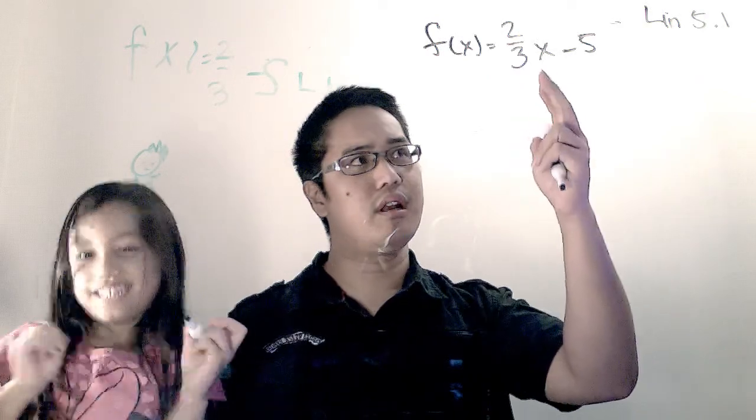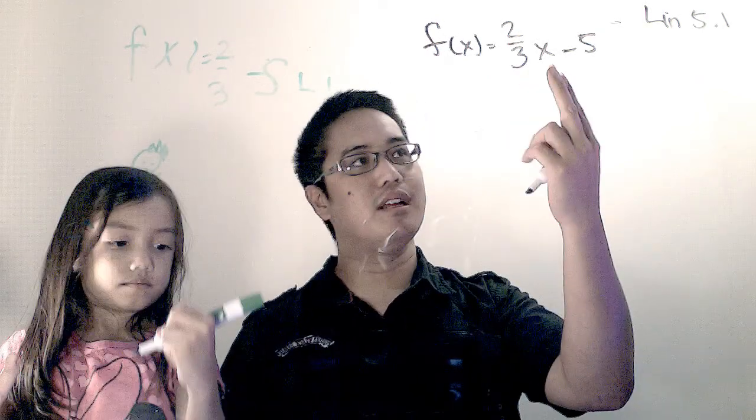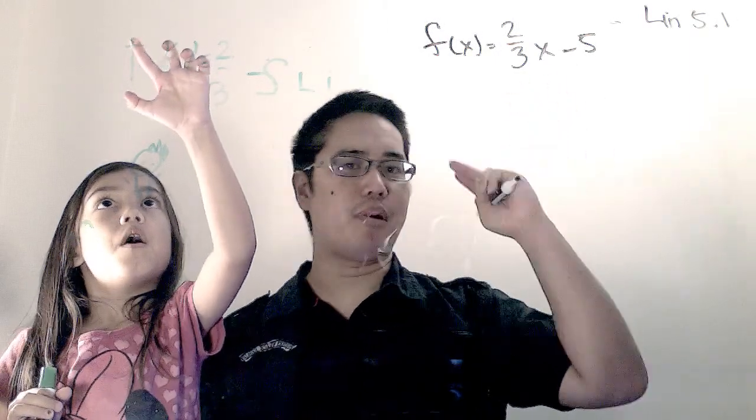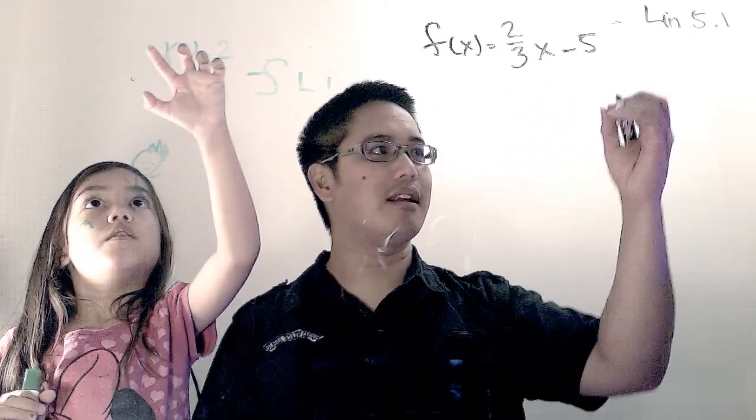This is the rise over the run. The m is the slope. The x, because it's a linear function, is x to the first power. And the b, the part where it crosses the y-axis, is at negative five.